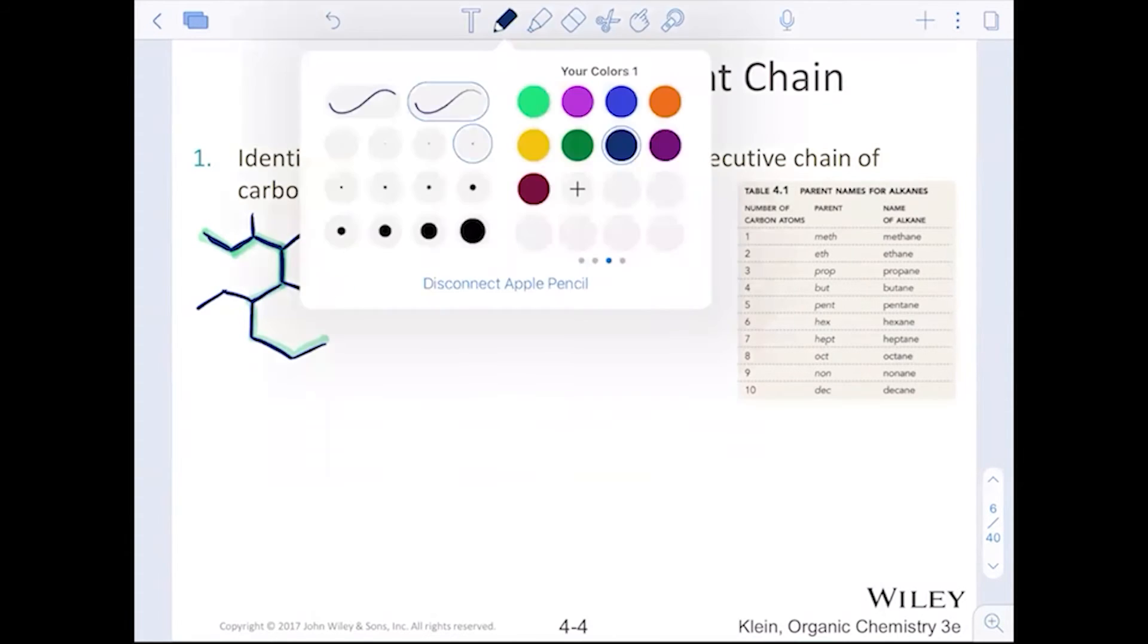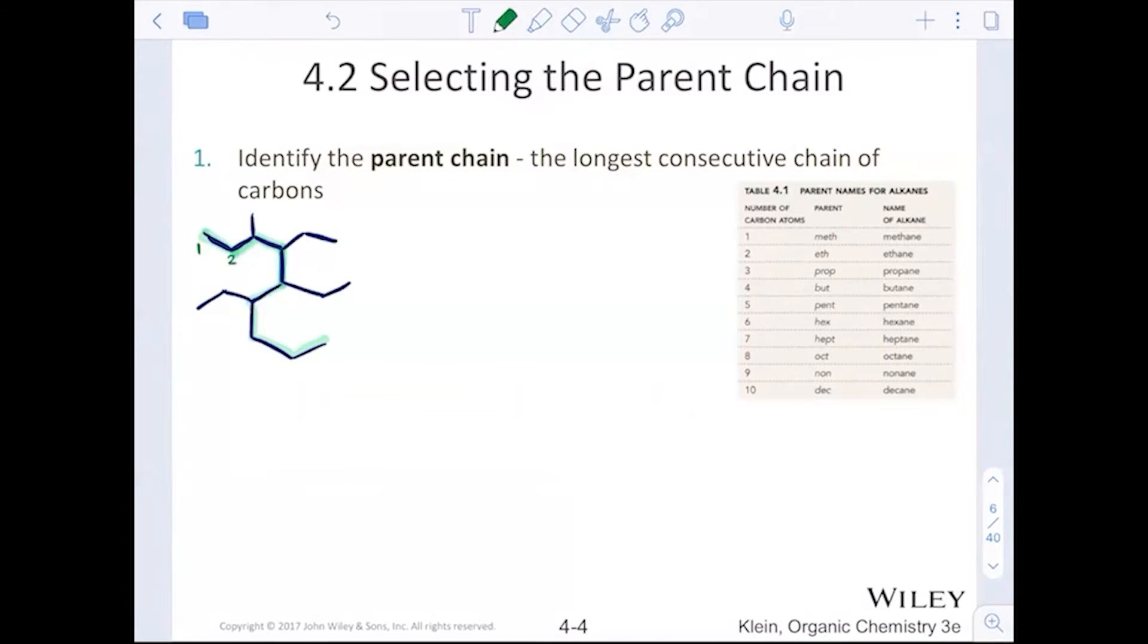So I'm going to go ahead and number those in green. Now, one, two, three, four, five, six, seven, eight, nine. This would be nonane. That's the parent name. Now there are other substituents around that, right? So when we're looking at those other substituents, that's where we're going to start numbering those and identifying. Here's one carbon. Here's a two carbon chain. Here's another two carbon chain. And here's another two carbon chain, right?